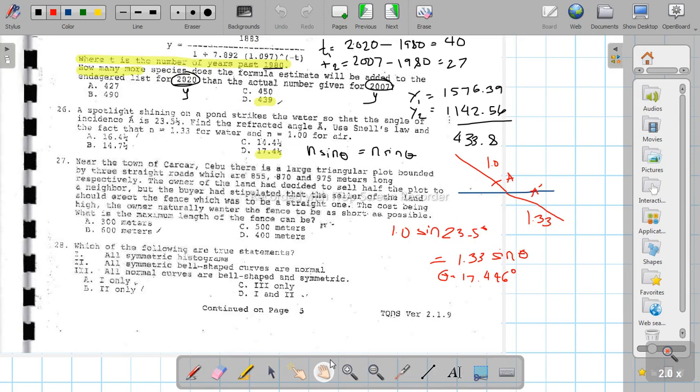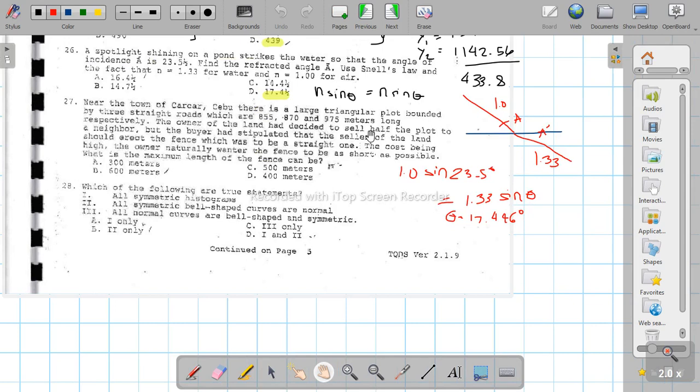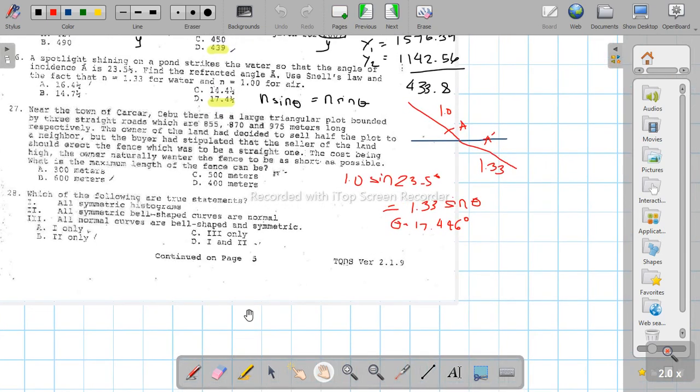Near the town of Karkar, Cebu, there is a large triangular plot bounded by three street roads which are 855, 817, 975 meters long respectively. The owner of the land had decided to sell half of the plot to a neighbor but the buyer had stipulated that the seller should erect the fence.